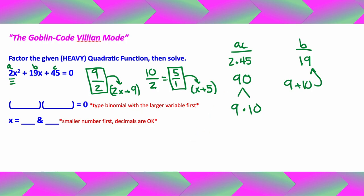Type the binomial with the larger variable first. So the 2x plus 9 is going to go here and then the x plus 5 is going to go right there.